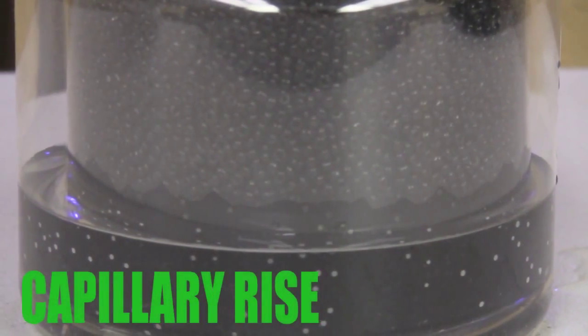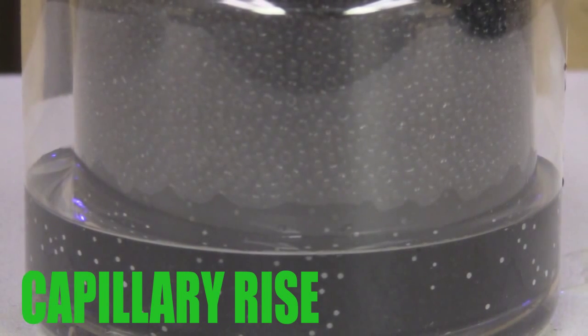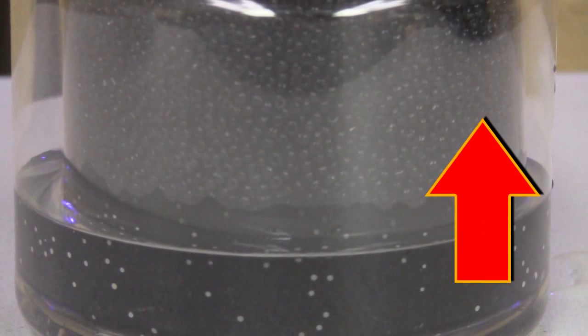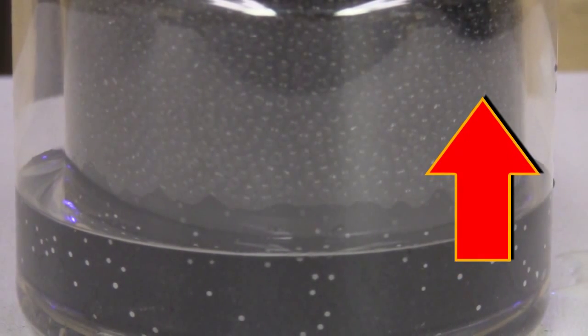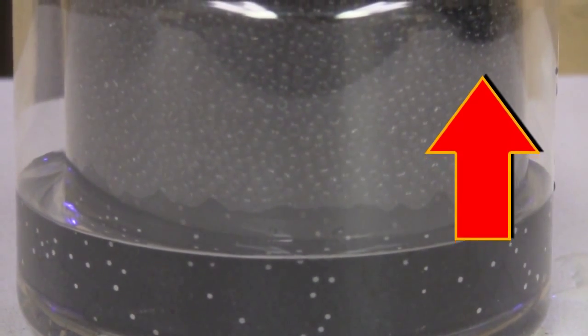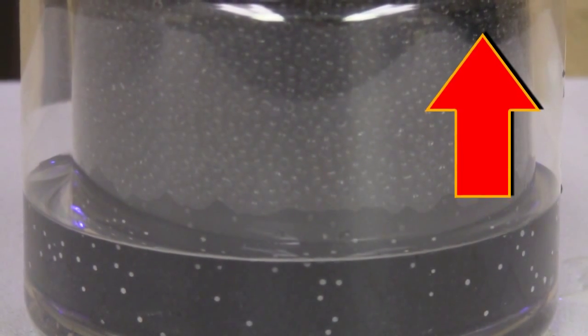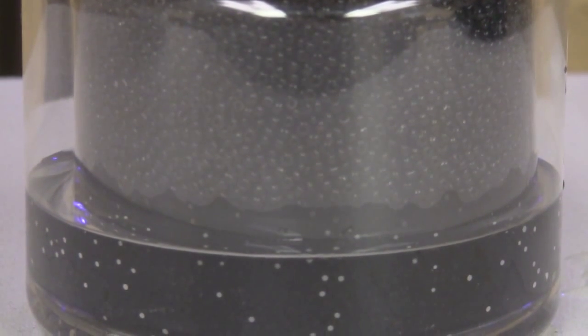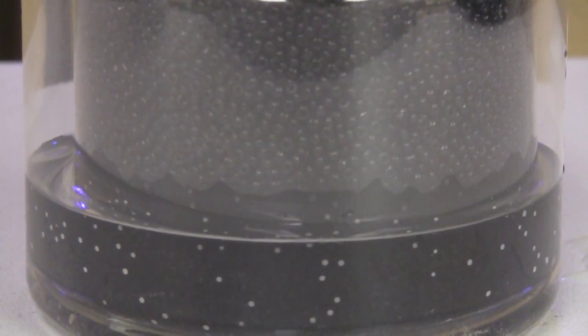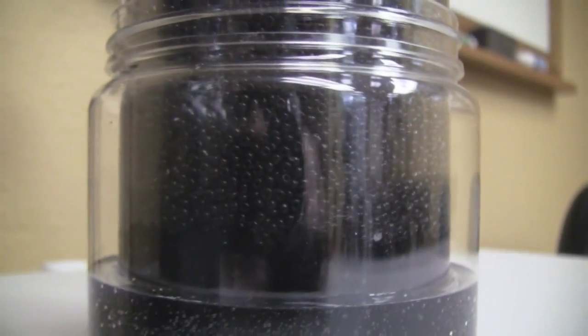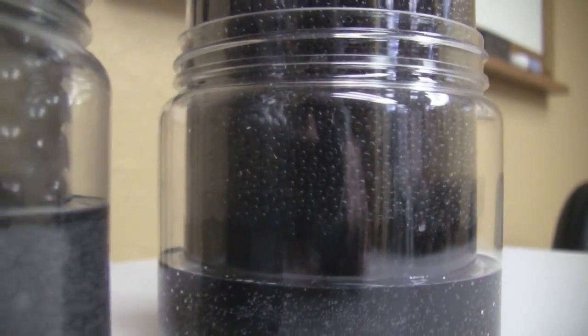The second type is the capillary rise of the soil water that happens against the forces of gravity with the help of adhesion and cohesion forces. Adhesion is the attraction of water molecules for soil particles and here is represented by the beads, whereas cohesion is the attraction of water molecules for each other. Capillary rise can happen in any direction from wet to dry areas.